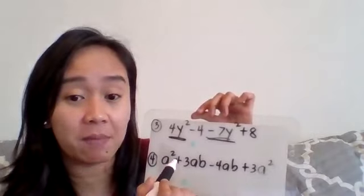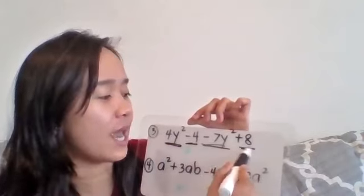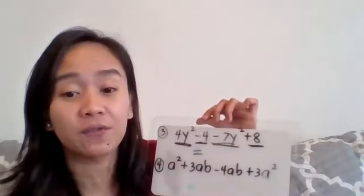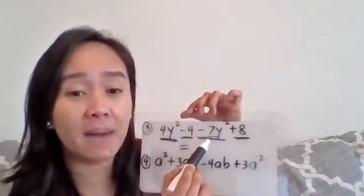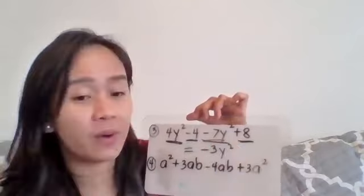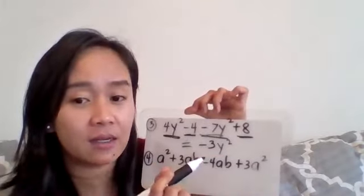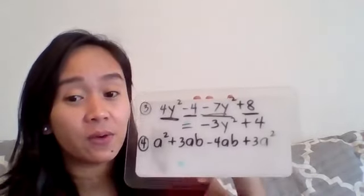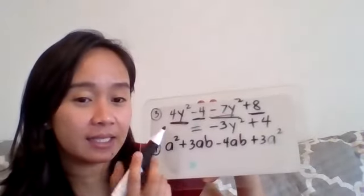Now the ones which are like terms is 4y² and that negative 7y², that means you can only combine them. On the other hand, we also have negative 4 and 8, so you can combine those two. Let's try the y² first. You always start with the one with the greatest exponent first. So 4y² minus 7y² is negative 3y². Now you have here negative 4 plus 8, that's just plus 4. So you should have -3y² + 4 for that one.